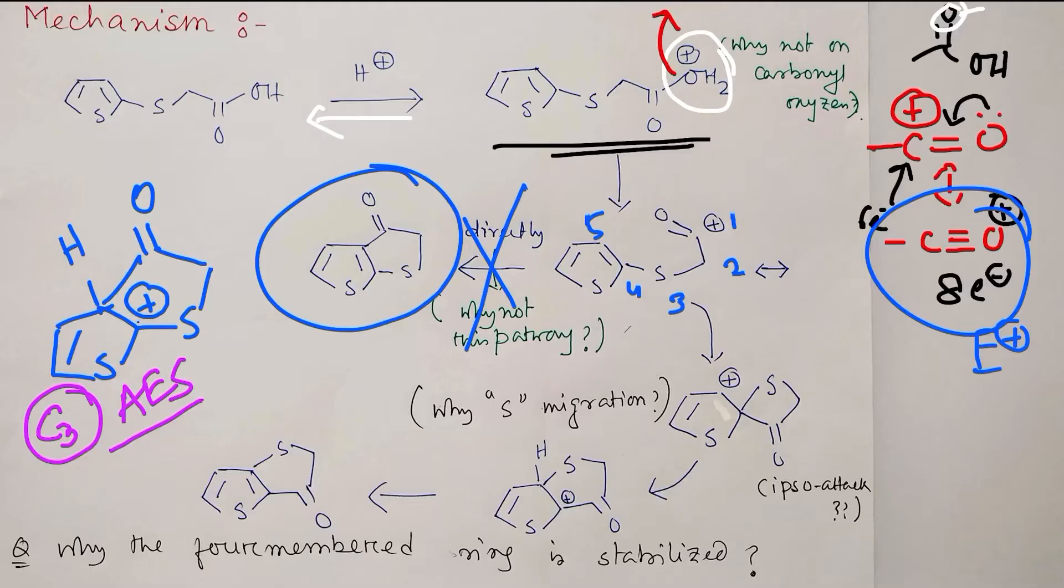We know actually this thing you may consider as a C3 substitution - means C3 aromatic electrophilic substitution on thiophene. We know that thiophene prefers to have C2 substitution over C3. That's why this path doesn't follow.